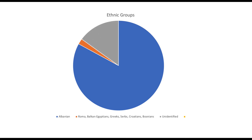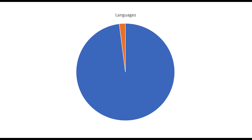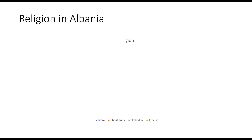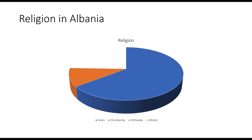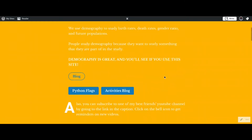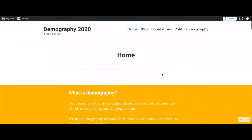The ethnic groups of Albania: 83% of the population is Albanian; 2% is Roma, Balkan Egyptian, Greek, Serb, Croatian, and Bosnian; and the rest is unidentified. Languages: 98% of the population speaks Albanian, and 2% speak other Balkan languages like Romani, Greek, and Bulgarian. Religion: 88% of the population is Muslim, 10% is Christian — 7% Orthodox — and the rest are atheist.